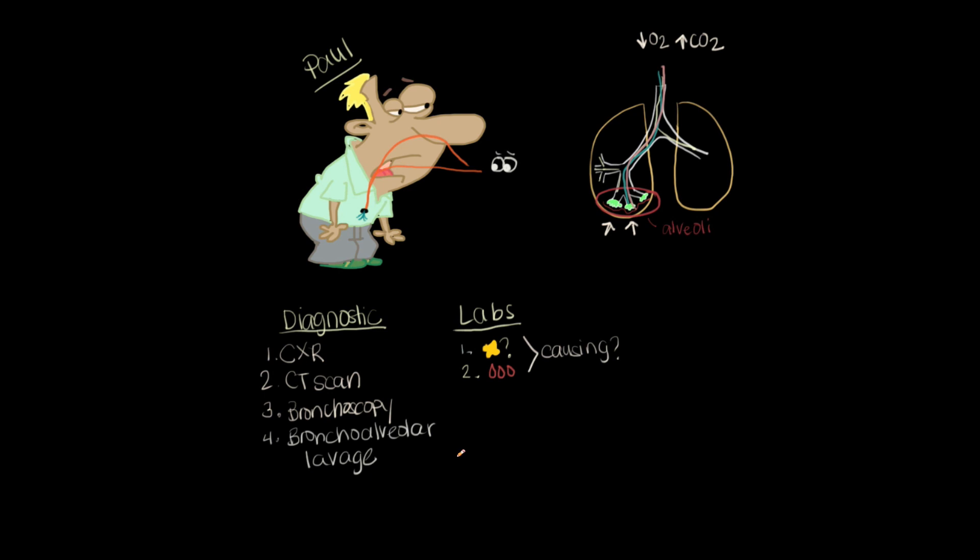So now that we've done these diagnostic tests and labs, we're actually now ready to treat it. So let's make a treat column. How do we treat it? If it's caused by a bacteria, our treatment choice is going to be an antibiotic. We're going to give an antibiotic medication to Paul to help kill that bacteria.